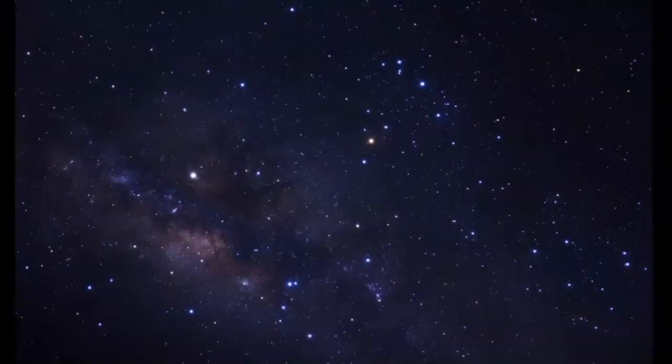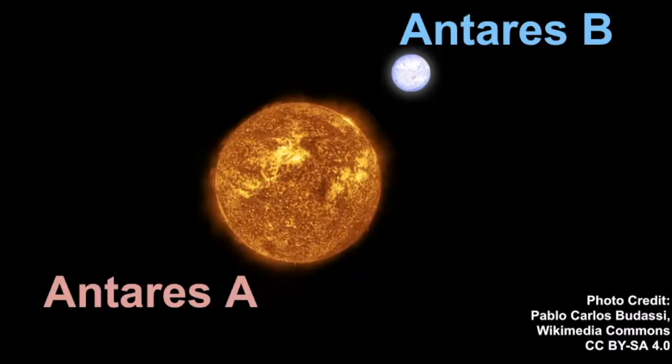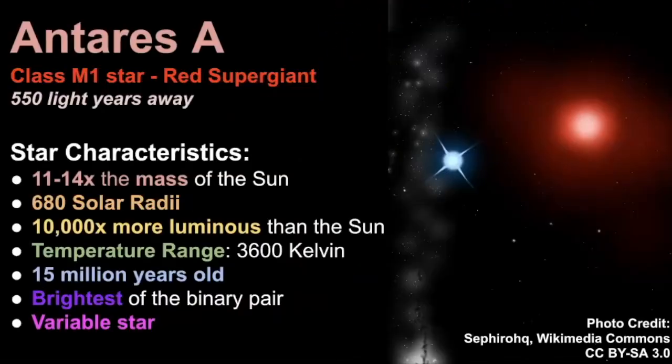Now let's dive into the specifics of this binary star system. So if we were to zoom into that particular area, this is what the Antares system is estimated to be like. Antares A is a red supergiant star towards the end of its life. And Antares B is a main sequence blue giant star.